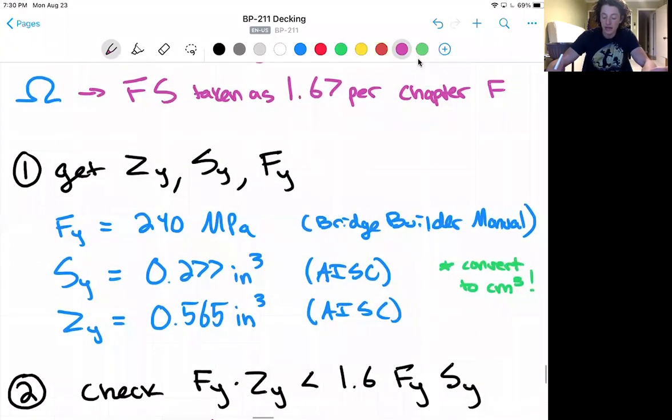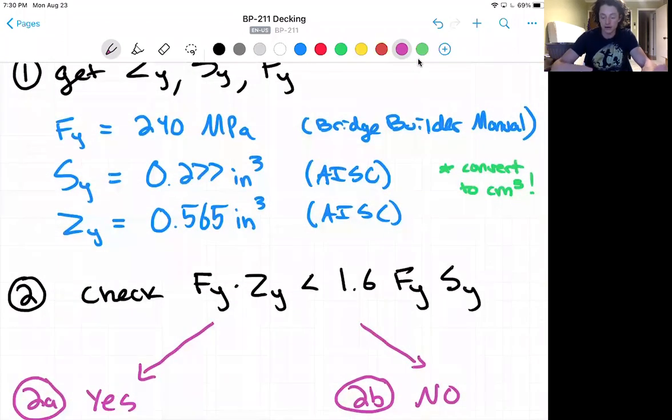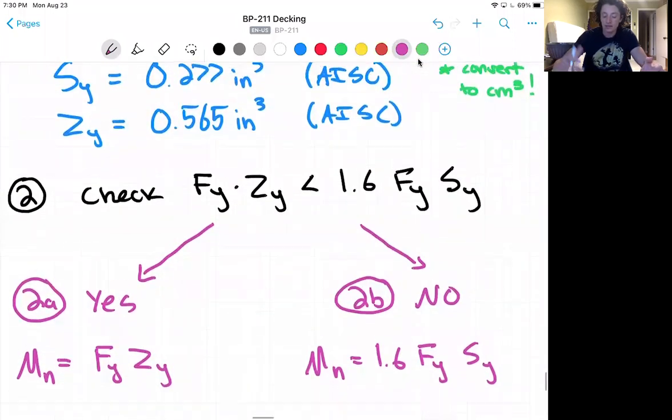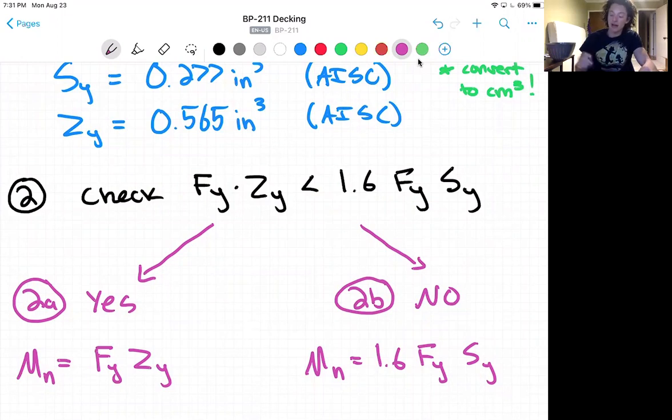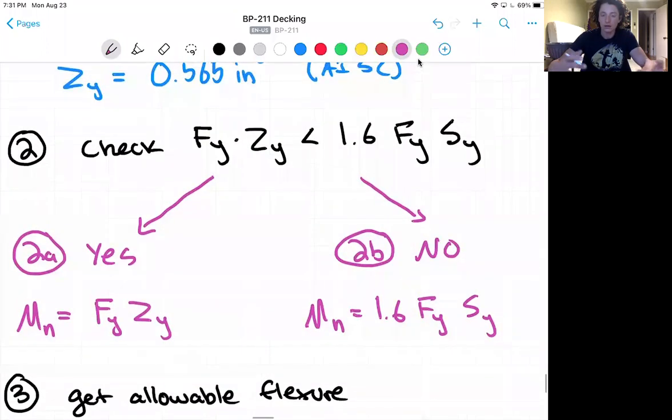Now we'll check if Fy*Zy is less than 1.6*Fy*Sy and we have two options, yes or no. If it is, we'll take Fy*Zy as our nominal moment value. If not, we'll take the larger value as our nominal moment capacity.